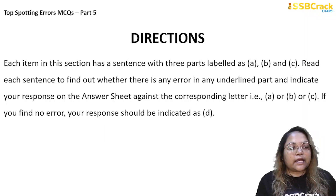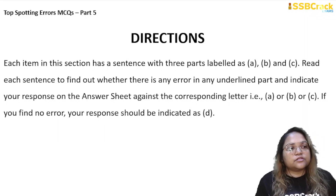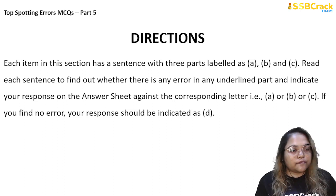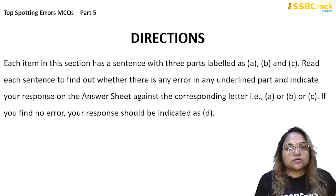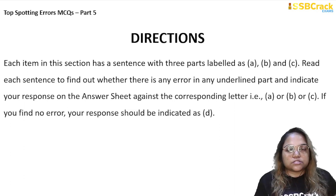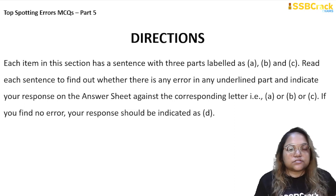First, let's read the directions. Each item in this section has a sentence with three parts labeled as A, B and C. Read each sentence to find out whether there is any error in any underlined part and indicate your response on the answer sheet against the corresponding letter — A, B, or C. If you find no error, your response should be indicated as D.